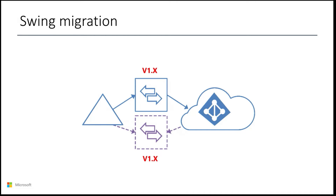On a swing migration, you will upgrade the staging server to the latest version of the sync client. Once the server is upgraded and performs a sync cycle, you can validate if the resulting changes are safe to be introduced in production. A safe way to do so is to query for pending export changes across all of your connectors.